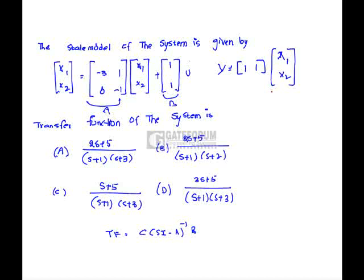After substituting these, we will get transfer function as 2s plus 5 divided by (s plus 1) times (s plus 3), which is option A is correct.